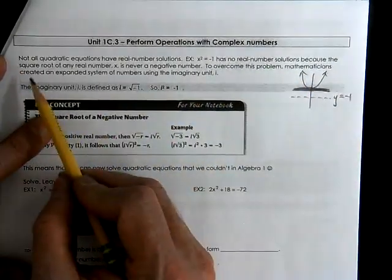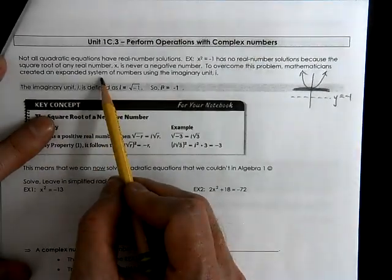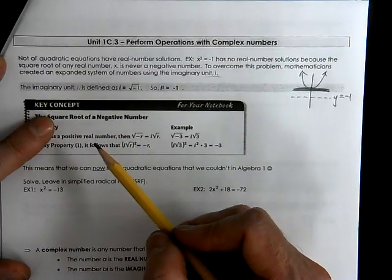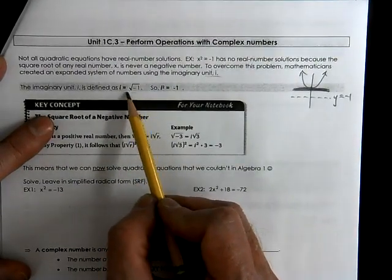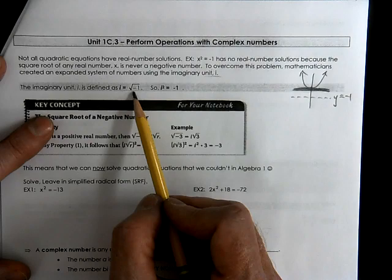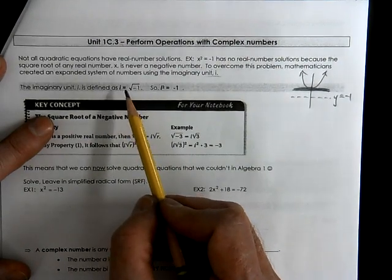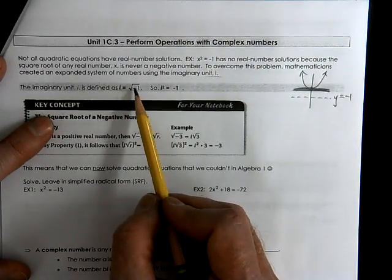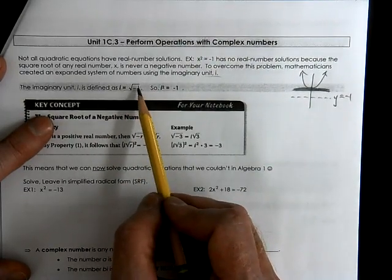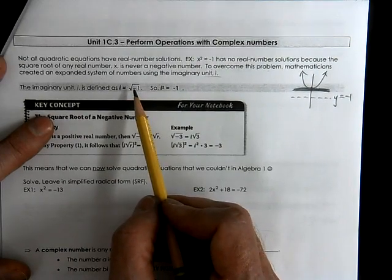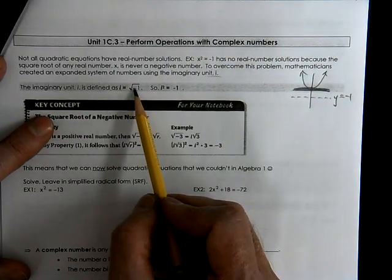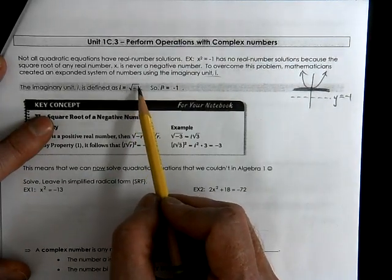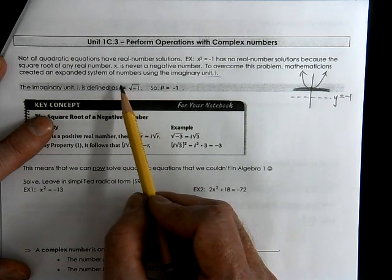To overcome this problem, mathematicians created an expanded system of numbers using the imaginary unit i. We're going to call i the square root of negative 1. In the past, when you've had a square root of a number that was negative, we said it had no real solution. But now we're going to be able to work with it by pulling out the negative in the square root and calling it i.